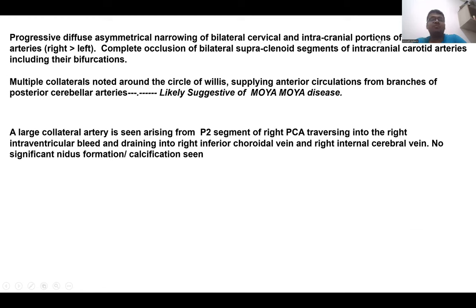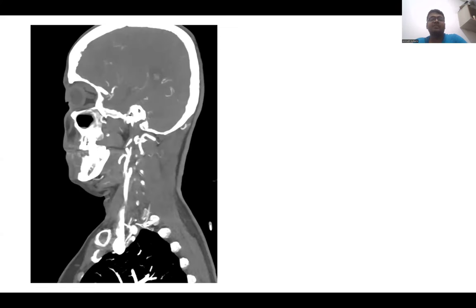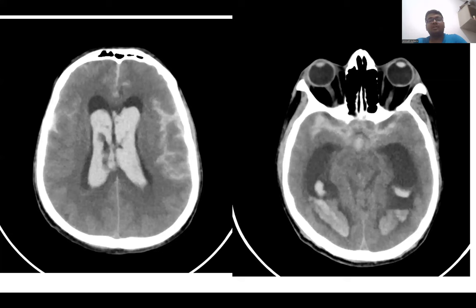In this case of moyamoya disease presenting with isolated bilateral intraventricular hemorrhage, there was complete occlusion of bilateral supraclinoid segments with narrowing of bilateral cervical and intracranial portions. In another case of intraventricular hemorrhage involving the fourth ventricle with some subtle subarachnoid hemorrhage, it was found to have thrombosis of the internal carotid artery — complete thrombosis of the extracranial and intracranial internal carotid artery.